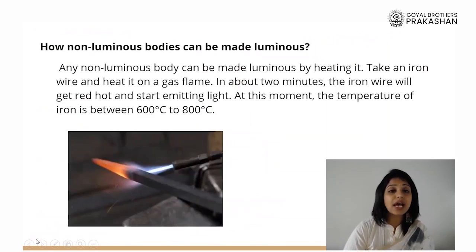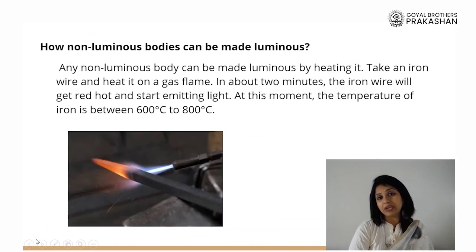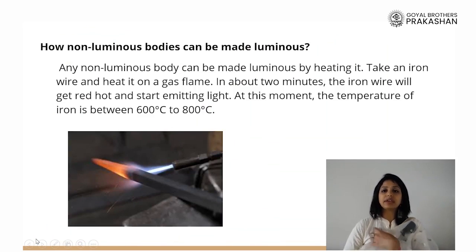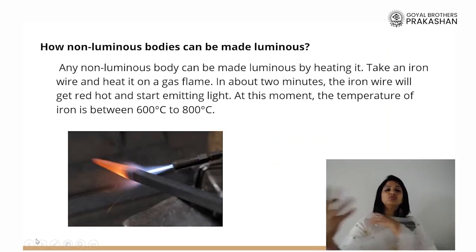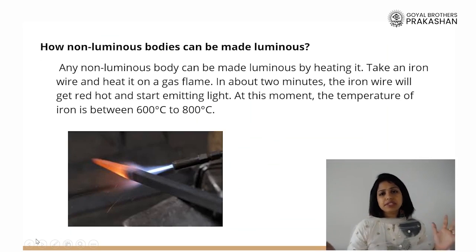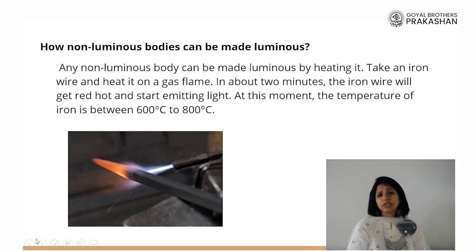Let us now understand how a non-luminous body can be made luminous. This is very interesting. We just talked about that you, me, table, chair, metal, stone — all the objects that do not have their own light are non-luminous. And the luminous objects are the ones which have their own light.